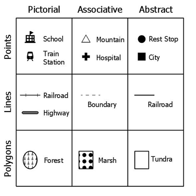Numerals are symbols for numbers. Alphabetic letters may be symbols for sounds. Personal names are symbols representing individuals. A red rose may symbolize love and compassion. The variable, in a mathematical equation, may symbolize the position of a particle in space. In cartography, an organized collection of symbols forms a legend for a map.